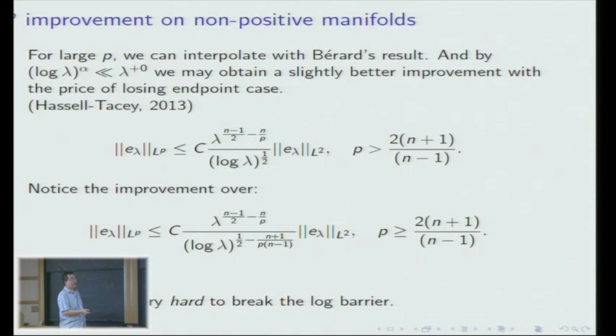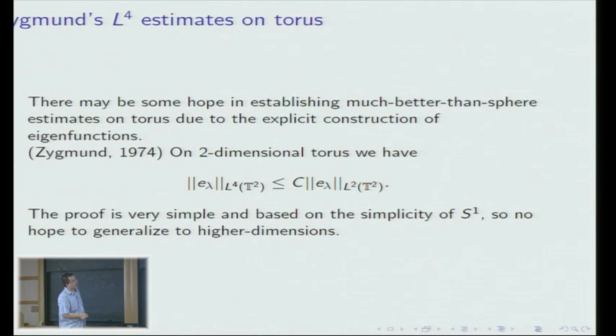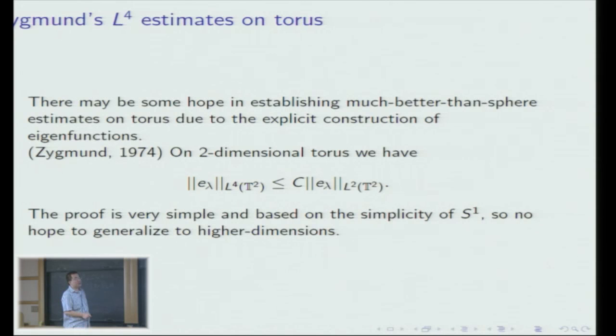Let's go back to torus — things are much more interesting and perhaps much more difficult, because on torus we have explicit information about the eigenfunctions. The best result is the so-called L4 estimate: on T2 specifically, we have a uniformly bounded LP estimate. This used a very special property of the circle S1 which is not shared by S2 or any higher-dimensional surface, so you cannot apply this technique to higher-dimensional torus. It is very interesting to ask what happens on higher-dimensional torus.